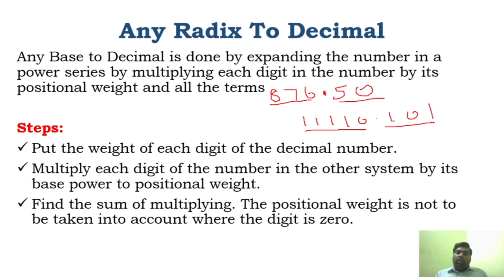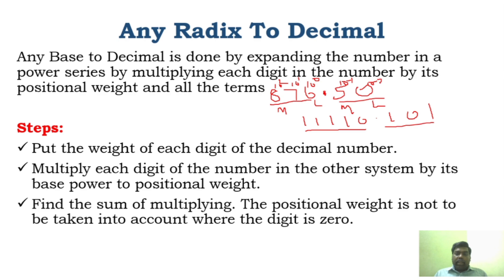For the integer part, you have to write from LSB to MSB — this is LSB and this is MSB. For the fractional part, this is MSB and this is LSB. So for a decimal system, it is 10 to the power 0, 10 to the power 1, 10 to the power 2, and similarly 10 to the power minus 1 and 10 to the power minus 2. For binary system, this is 2 power 0, 2 power 1, 2 power 2, 2 power 3, 2 power 4, and this is 2 power minus 1, minus 2, and minus 3.